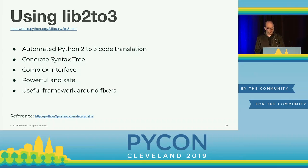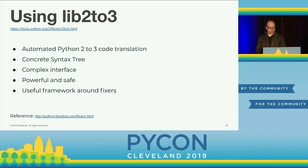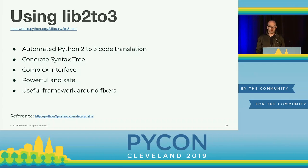In lib2to3, there are two types of nodes: nodes and leaves. Leaf nodes contain all the actual code and have a type: things like INDENT for indentation, STRING for all strings including docstrings, NUMBER for any number (integer, float, hexadecimal, octal), LPAR/RPAR for parentheses, and NAME for keywords or variables. Note that many of these are overloaded — NAME covers both keywords and variables, NUMBER covers integers, floats, hexadecimal, and octal — because lib2to3 was designed for code transformations, not deep analysis of numeric types.